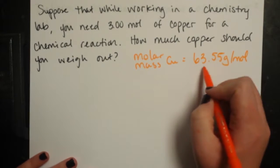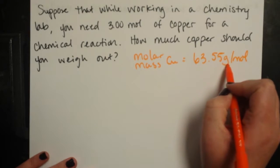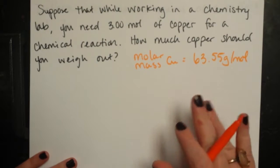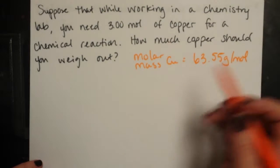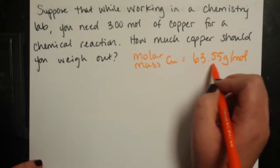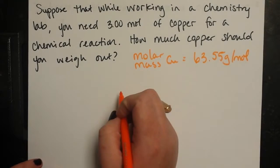All right, meaning that if I weigh out 63.55 grams of copper, that means that I've got one mole of copper atoms there exactly. So we can kind of indirectly count atoms by just weighing them out. Okay, just like the jelly bean problem.